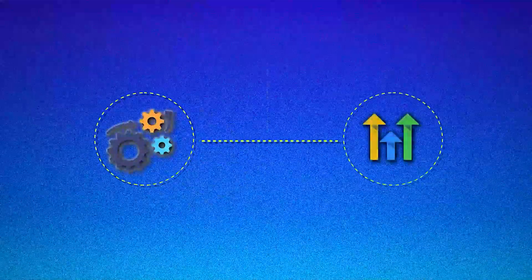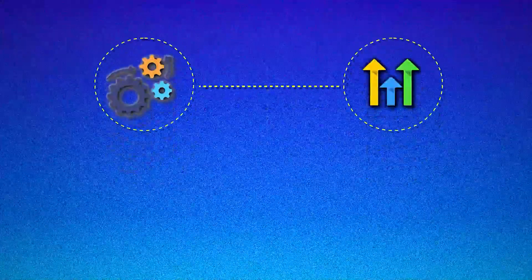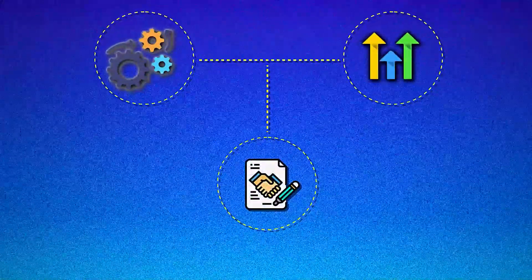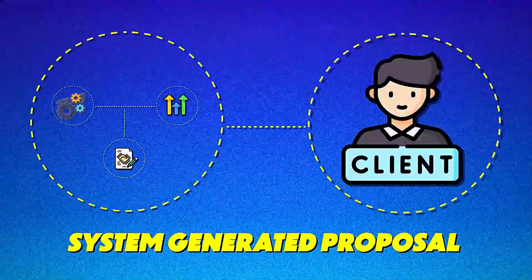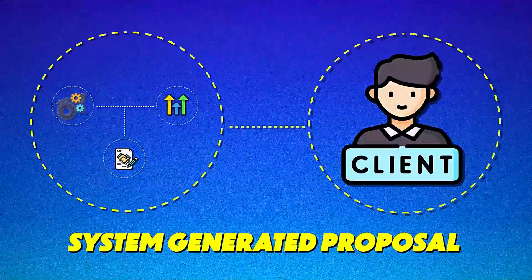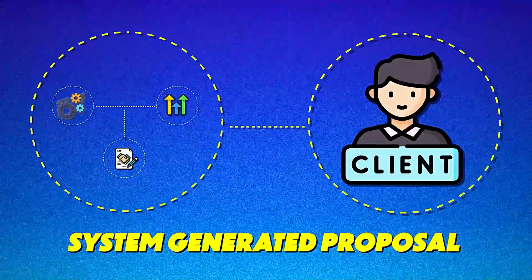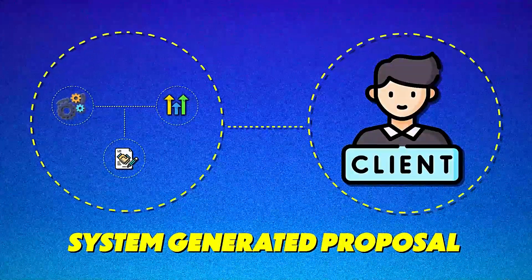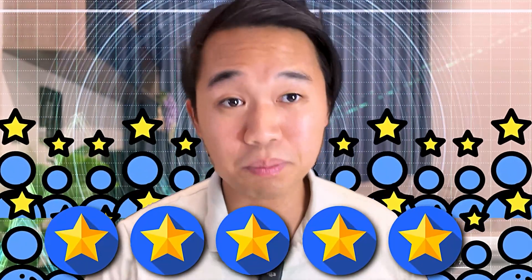For those of you who are new here, this is a process where you can simply add one tag to the contact on High Level and the system will automatically send out a beautiful custom-made proposal to your client immediately after you do that.